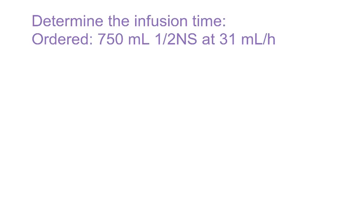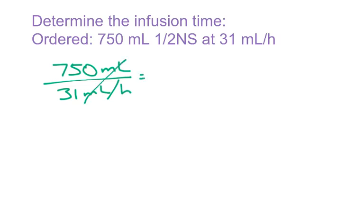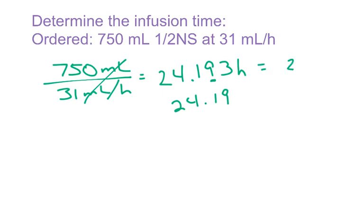Here's another one to determine the infusion time. I'm going to take 750 milliliters over 31 milliliters an hour. The units cancel, so I've got 750 divided by 31. I get 24.193 — it keeps going — so round to 24.19, which gives me 24 hours. For the minutes, take .19 times 60 and I get 11.4 minutes, which rounds to 11 minutes.